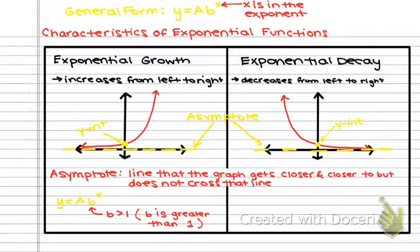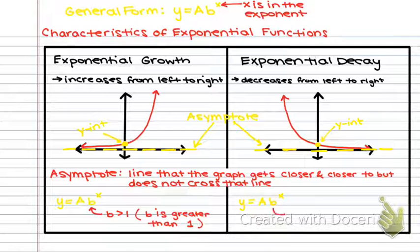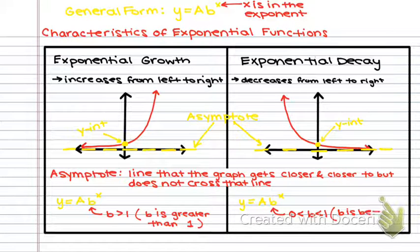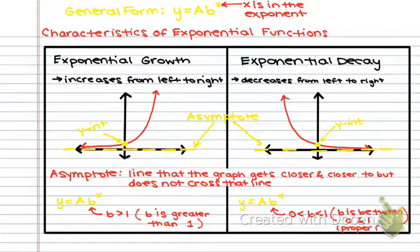For a decay function, the general form is the same, except your b value has to be between zero and one. If you remember from our transformations, that means b is a proper fraction.